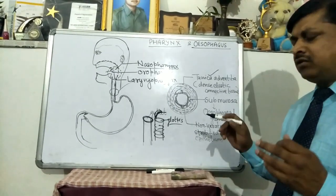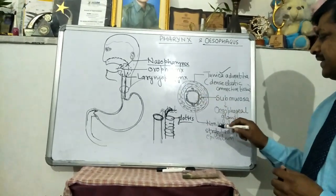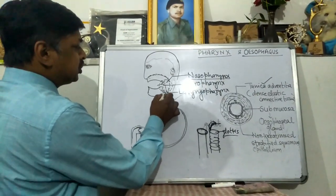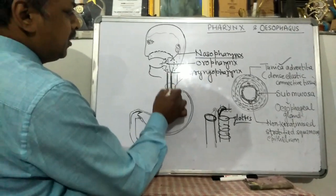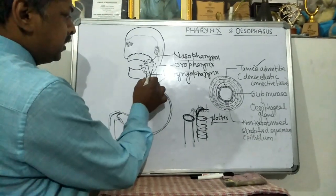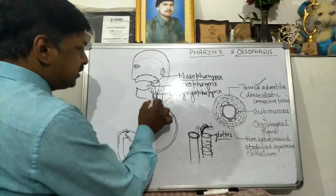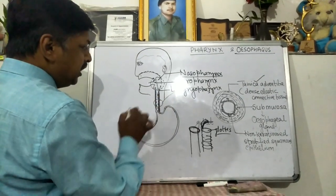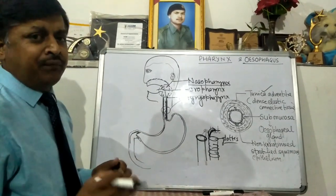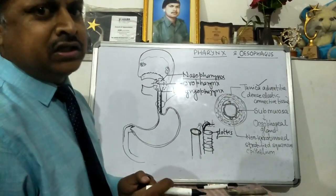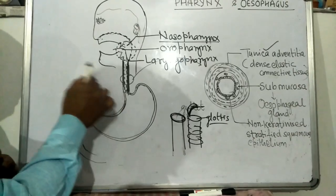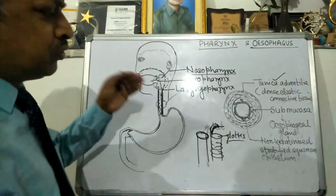The submucosa of the esophagus contains esophageal glands which secrete mucus. When the bolus passes through the esophagus, a peristaltic movement helps push it along. The mucus secreted helps the food pass easily from the esophagus to the stomach, prevents friction, and protects the wall of the esophagus from hard particles present in the food material.